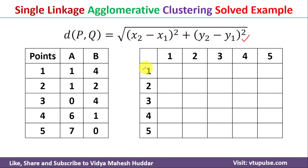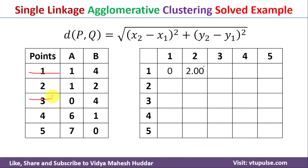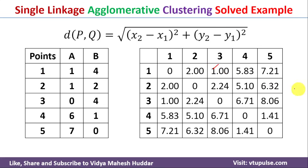First, the distance between data points 1 and 1 is 0. For data points 1 and 2: x2 = 1, x1 = 1, so 1 - 1 = 0; y2 = 2, y1 = 4, so 2 - 4 = -2, and (-2)² = 4, giving square root of 4 = 2. For data points 1 and 3: x2 = 0, x1 = 1, so (0-1)² = 1; y2 - y1 = 4 - 4 = 0, so square root of 1 = 1. Similarly, we find distances between all remaining data points.